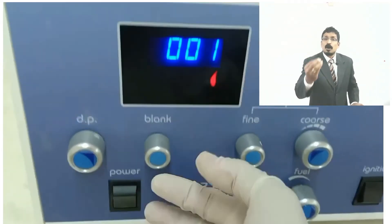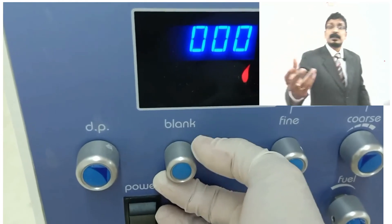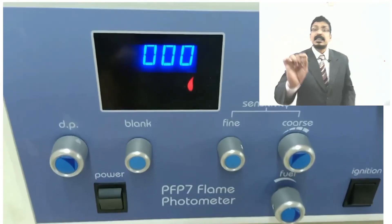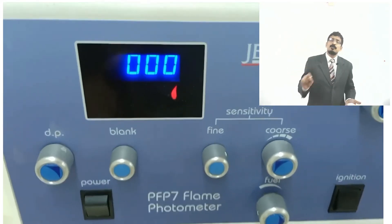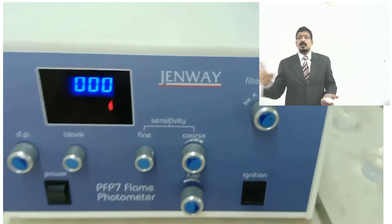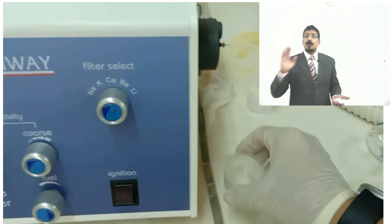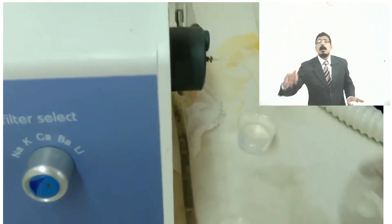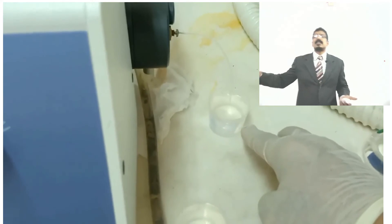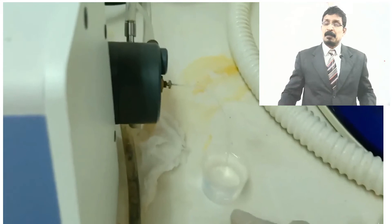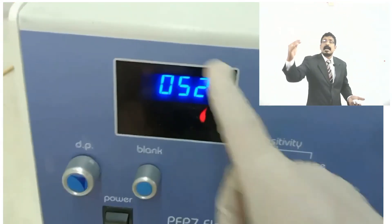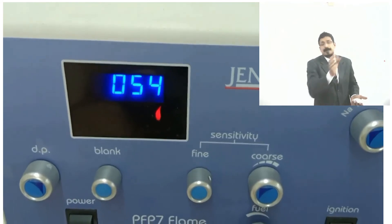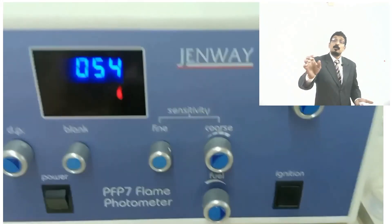Set zero with distilled water and take the highest concentration — adjust it to give a reading of 100. Then all other concentrations can be easily identified to make a standard graph. For the unknown sample, keep it in the same capillary tube, get a reading, and extrapolate from the y-axis to the x-axis on the graph to find the concentration. A simple graphical standard curve method is used for finding the concentration.